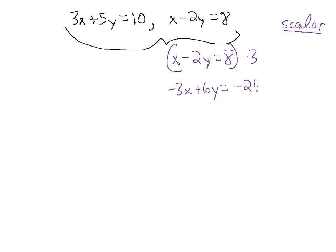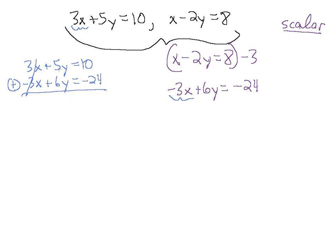So let's combine these two equations. We have 3x plus 5y equals 10. This will be effective because we have 3x and minus 3x. When we add these two equations, 3x and minus 3x cancel. We have 6y and minus 24. Combining gives us 11y equals minus 14.